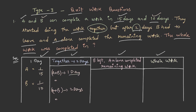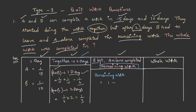For 1 day, A plus B's work is 1 by 15 plus 1 by 10, which equals 1 by 6. For 2 days it becomes 1 by 6 into 2, which is 1 by 3. After this, B left and A alone completed the remaining work. Taking the total work as 1 and work done in 2 days as 1 by 3, the remaining work is 2 by 3. Since A completes 1 by 15 of work per day, the days to complete 2 by 3 of the work, on cross multiplication, gives 10 days.